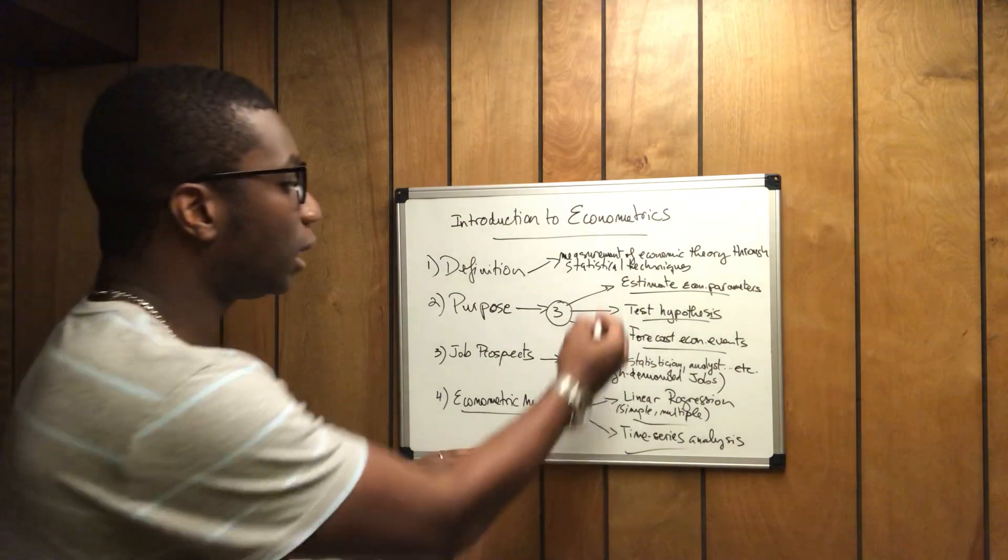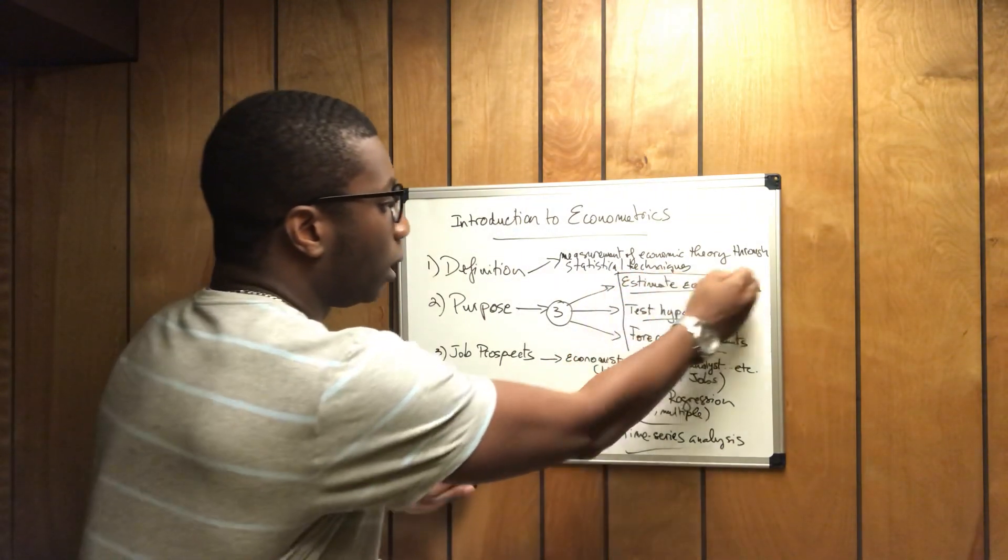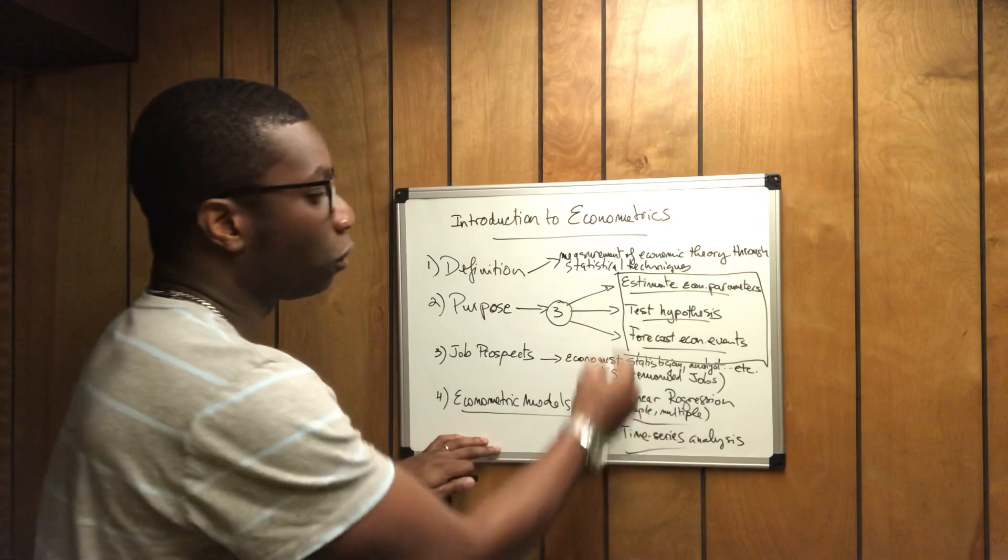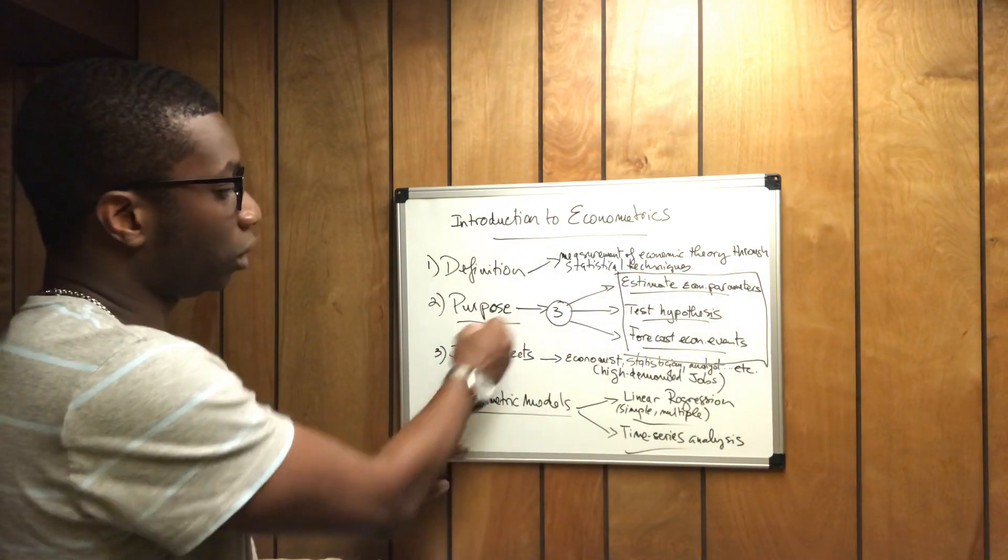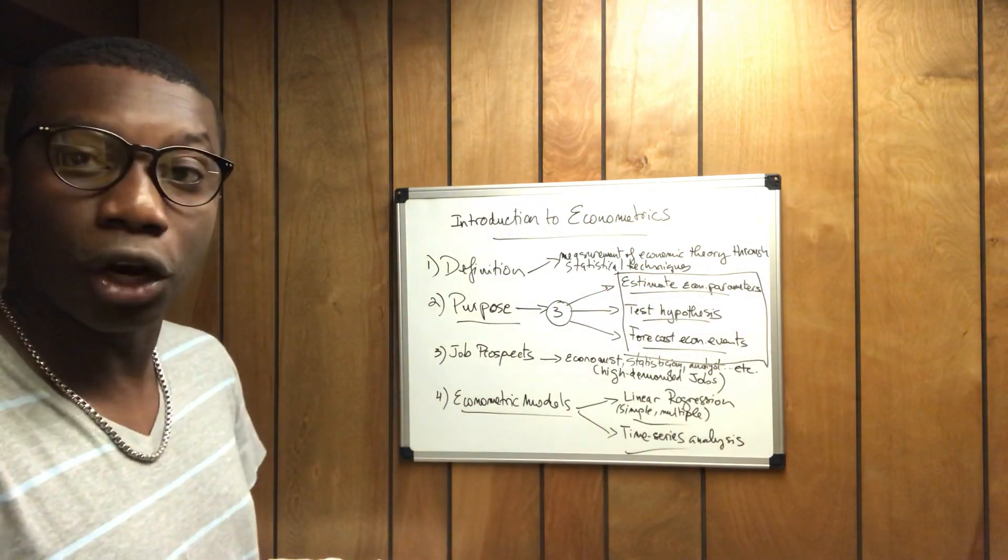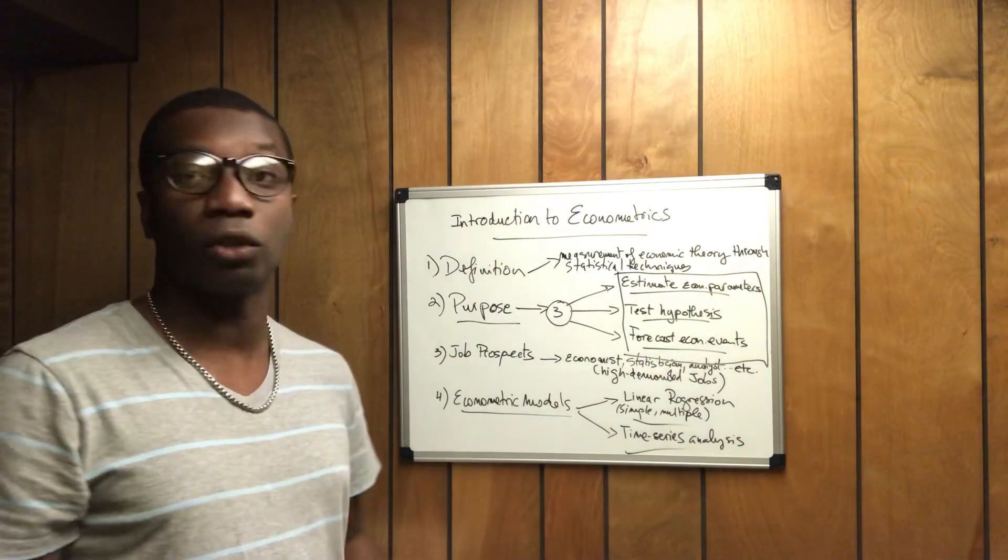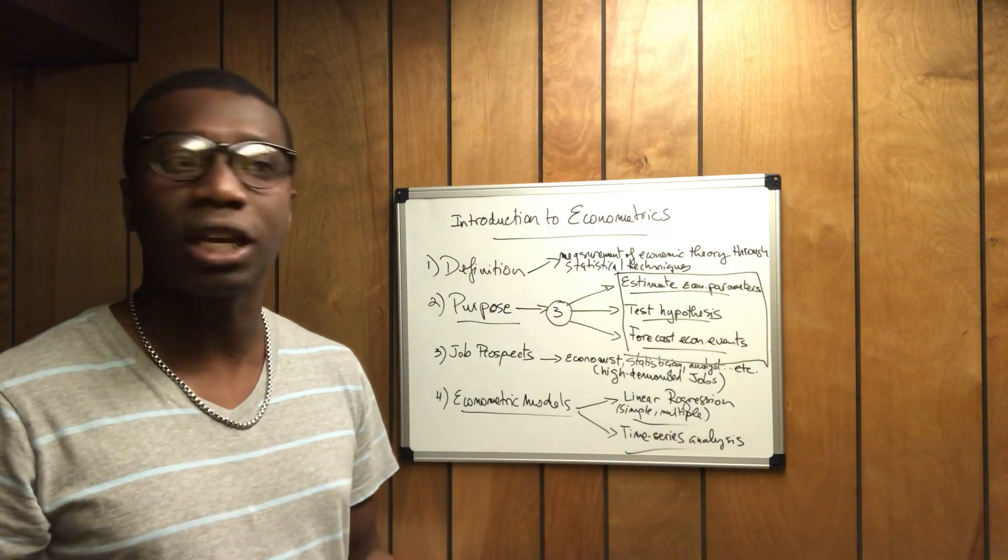So these are the three main elements of econometrics, why we use econometrics. So the third one now is to talk about job prospect. What can you do with econometrics? You can do many things.